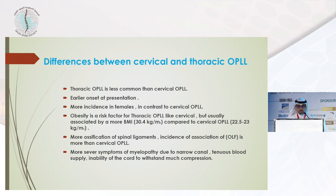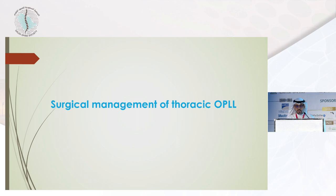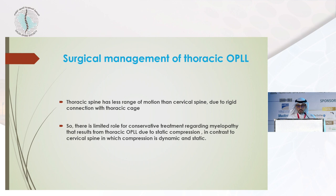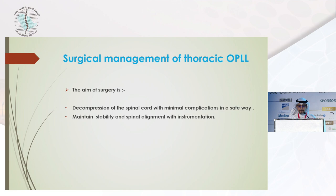Regarding surgical management of thoracic OPLL: the thoracic spine has less range of motion than the cervical spine due to its rigid connection to the thoracic cage and the narrower canal. There is therefore a very limited role for conservative treatment regarding myelopathy resulting from thoracic OPLL. The aim of surgery is to decompress and to stabilize the thoracic spine.